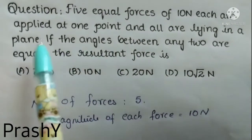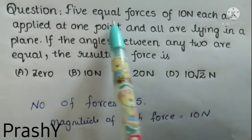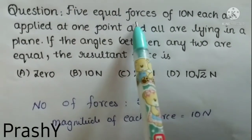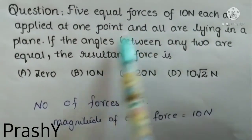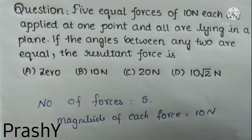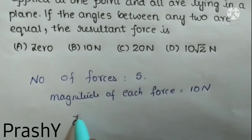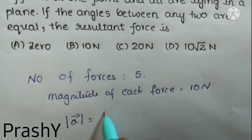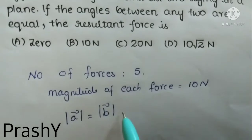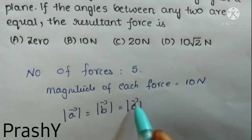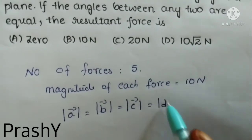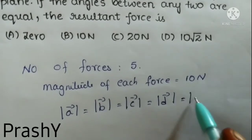Now the condition is given that 5 equal forces means the magnitude of all forces are equal. So 5 forces acting at a point, all of equal magnitude. I will write it as mod A bar equals mod B bar equals mod C bar equals mod D bar equals mod E bar.